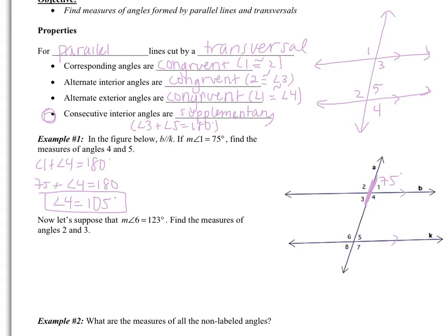Now looking at angles 1 and 5: angle 1 is above the line and to the right, and angle 5 is also above and to the right — they're corresponding angles. Corresponding angles are congruent, so angle 1 is congruent to angle 5. Since angle 1 is 75 degrees, angle 5 is also 75 degrees.